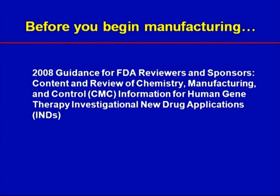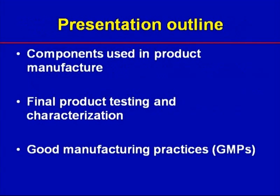I'd like to draw your attention to the FDA guidance published in 2008, entitled Guidance for FDA Reviewers and Sponsors: Content and Review of CMC Information for Human Gene Therapy INDs. This guidance covers these topics in a much more comprehensive manner than this presentation. If your final product contains human cells, there is also a 2008 guidance on human somatic cell therapy that you'll find helpful. Now let's look at the various aspects of the CMC section in more detail, covering raw materials and components, types of testing and characterization, and the GMP practices you'll follow during manufacturing of a gene therapy product for a Phase I trial.